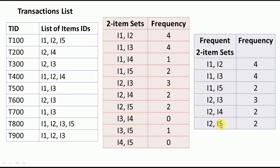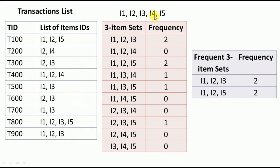From these frequent two-item sets, we need to generate three-item sets. The items present are I1, I2, I3, I4, and I5. The possibilities with I1 are: I1-I2-I3, I1-I2-I4, I1-I2-I5, I1-I3-I4, I1-I3-I5, I1-I4-I5. With I2: I2-I3-I4, I2-I3-I5, I2-I4-I5. And finally I3-I4-I5. These are all the three-item set possibilities.